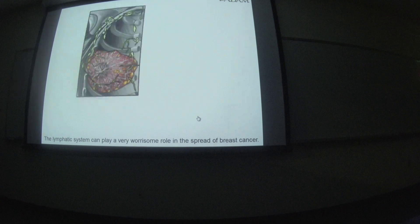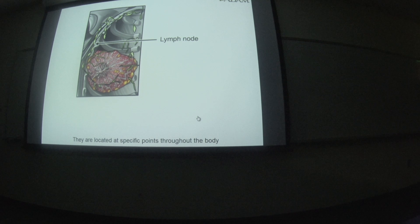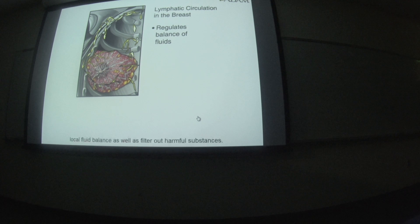The lymphatic system can play a very worrisome role in the spread of breast cancer. Lymph nodes filter the lymph as it passes through the system. They are located at specific points throughout the body, such as in the armpits and high in the throat. Lymphatic circulation in breast tissue helps regulate the local fluid balance as well as filter out harmful substances.